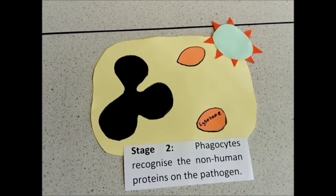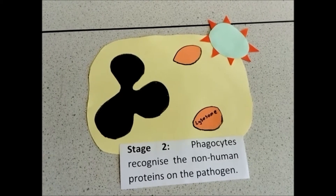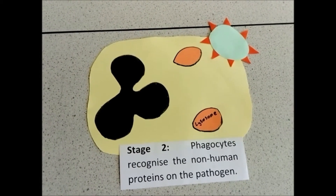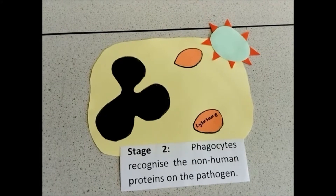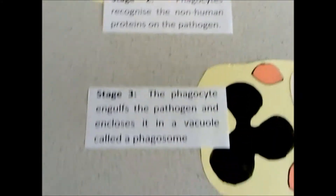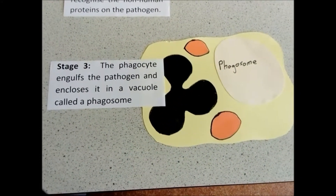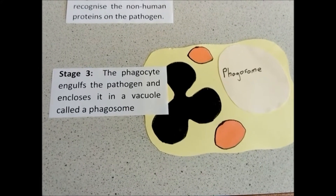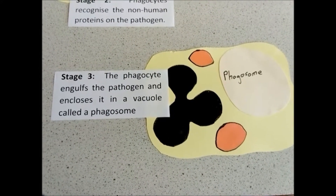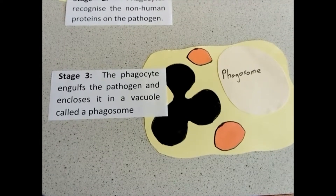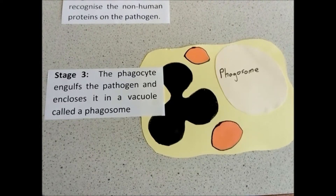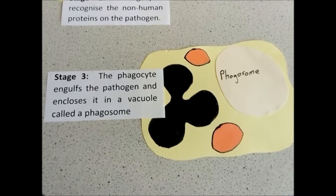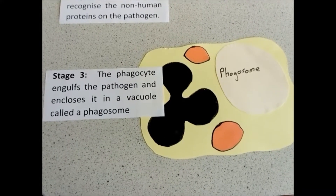The phagocyte recognizes the pathogen because it has non-human antigens on its cell surface. The third stage is that the pathogen is encased in a vesicle called a phagosome, which is a membrane-bound sac that encases the pathogen.